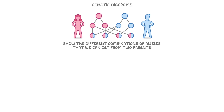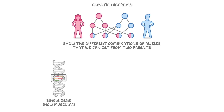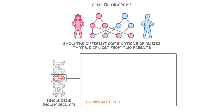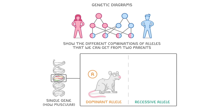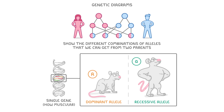To show you what we mean, let's imagine that there was a single gene that determined how muscular a mouse would be. Let's suppose that the dominant allele, which we can show as a capital A, codes for a normal mouse with average muscle, while the recessive allele, which would be a lowercase a, will code for a muscular mouse. Basically we show the two different alleles that an individual has as upper and lowercase versions of the same letter, with the uppercase letter meaning it's dominant and the lowercase one being recessive.